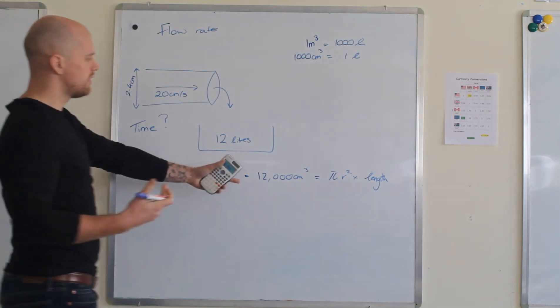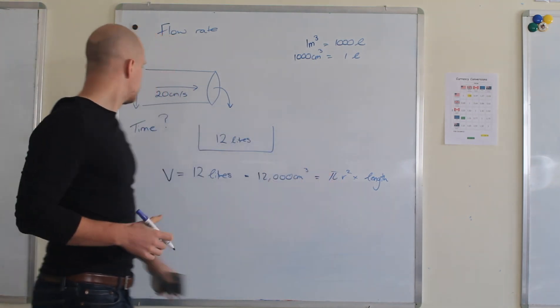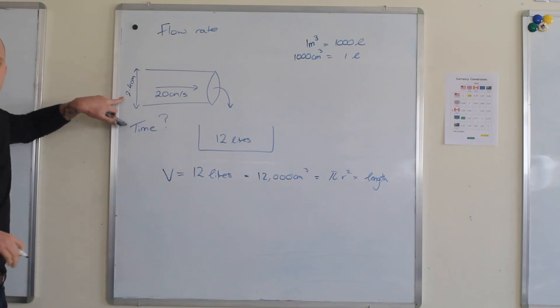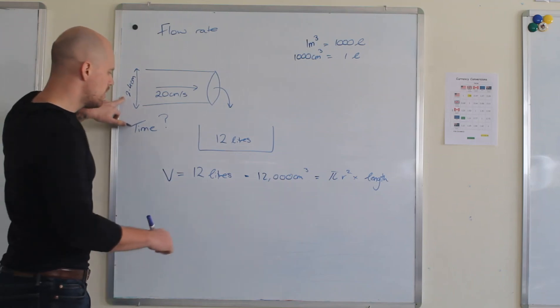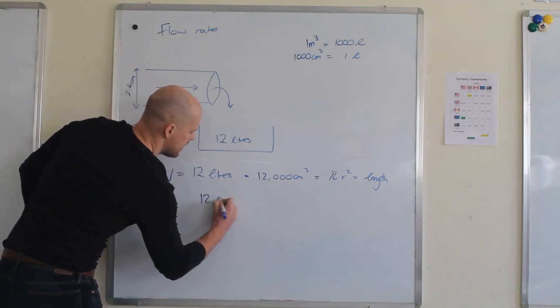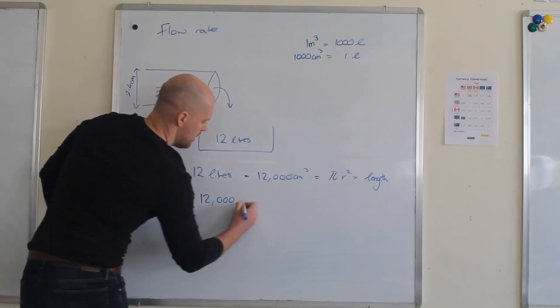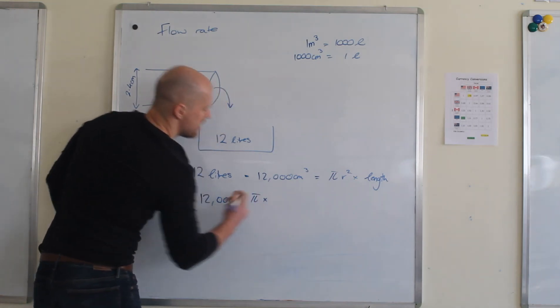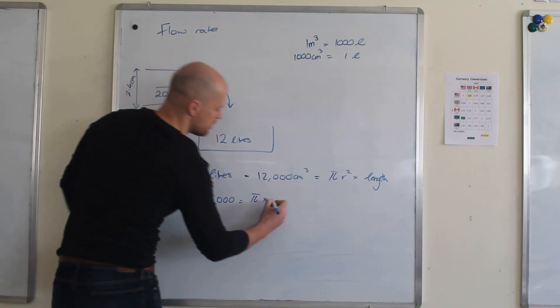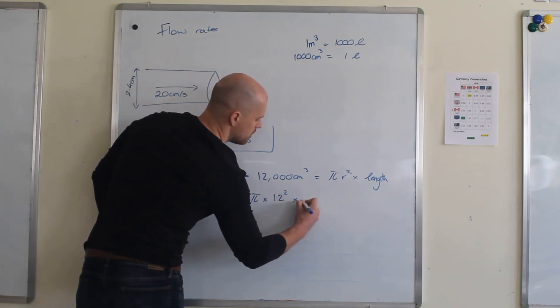But we do know pi, obviously, and we do know r. r is half of the diameter, it's half of 2.4. So I have 12,000 equals pi times, now the radius is half of this, so that's 1.2 squared. And we'll call that L.